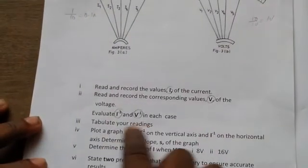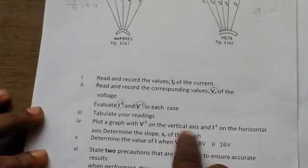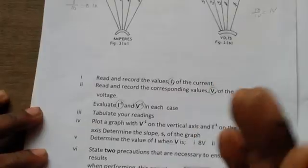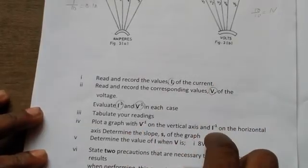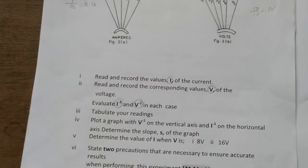Now let's go back to the questions. Look at the question. The question says, to tabulate your readings, we have done that. Plot the graph of reciprocal voltage on the vertical axis and reciprocal current on the horizontal axis and determine the slope. So, we go ahead to plot the graph of reciprocal V and that of the current I. The next is to go and plot the graph now. So, let's look at how the graph is. Here we go.